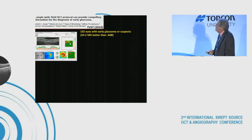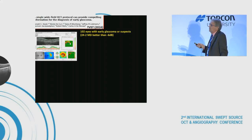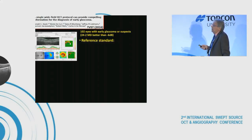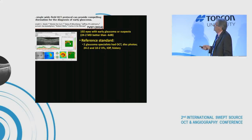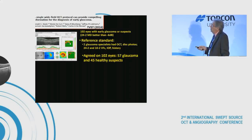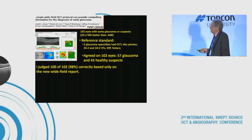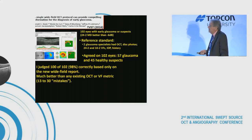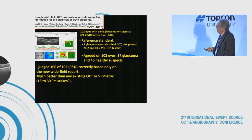For validation, we had 102 eyes with early glaucoma — defined by mean deviation better than minus 6, or suspects with abnormal-looking discs. Two glaucoma specialists, including the next speaker Dr. Liebman, served as the reference standard. They were given everything: OCT, disc photos, 24-2, 10-2, and more. They agreed on 57 eyes with glaucoma and 45 healthy suspects. Using only this report, I made just two mistakes.